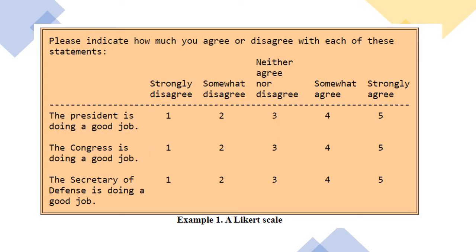Here is an example of a Likert scale. Respondents are asked to indicate how much they agree or disagree with each statement on a 5-point scale: strongly disagree, somewhat disagree, neither agree nor disagree, somewhat agree, and strongly agree. The group of items includes statements such as: 'The president is doing a good job,' 'The congress is doing a good job,' and 'The secretary of defense is doing a good job.'